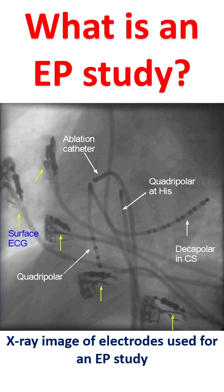When the electrical system of the heart is diseased, several heart rhythm disorders can occur, which could be fast rhythms, slow rhythms, and irregular rhythms. These rhythms are usually picked up by the electrical recording of the heart known as ECG.